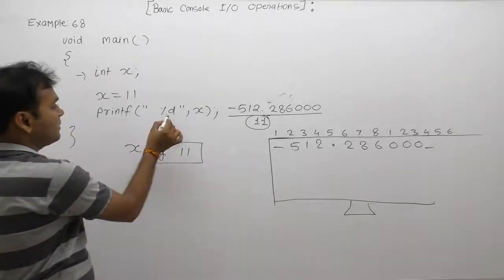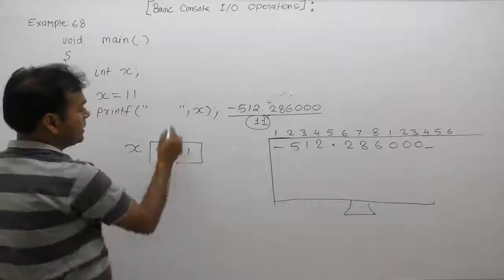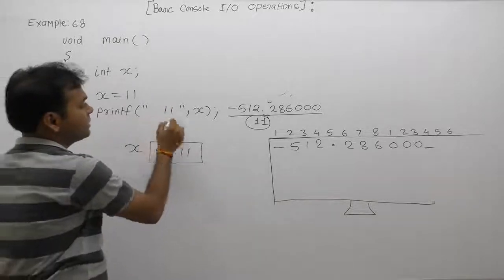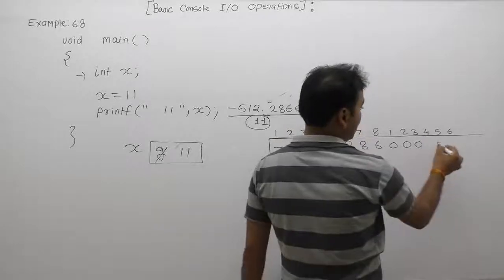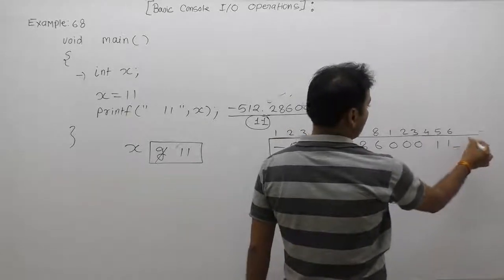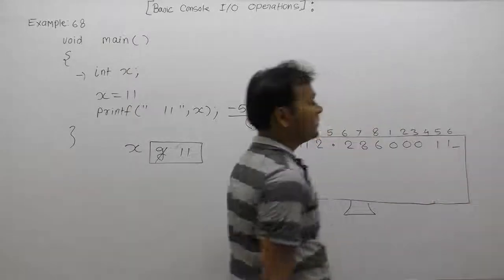After the next printf, in place of percent d, the value of x got replaced as eleven. Therefore, it will print space 11, 11 space. Then the current position of the cursor. This is the final output of the given example application.